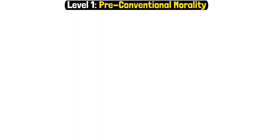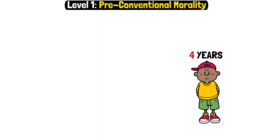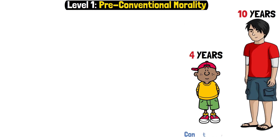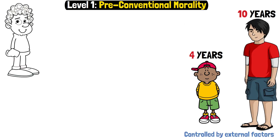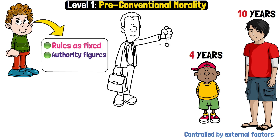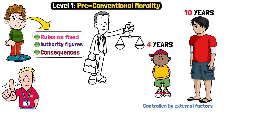Level 1 – Preconventional Morality. This level, spanning from ages 4 to 10, involves morality controlled by external factors. Children see rules as fixed, imposed by authority figures, and judge actions based on consequences, not intentions.